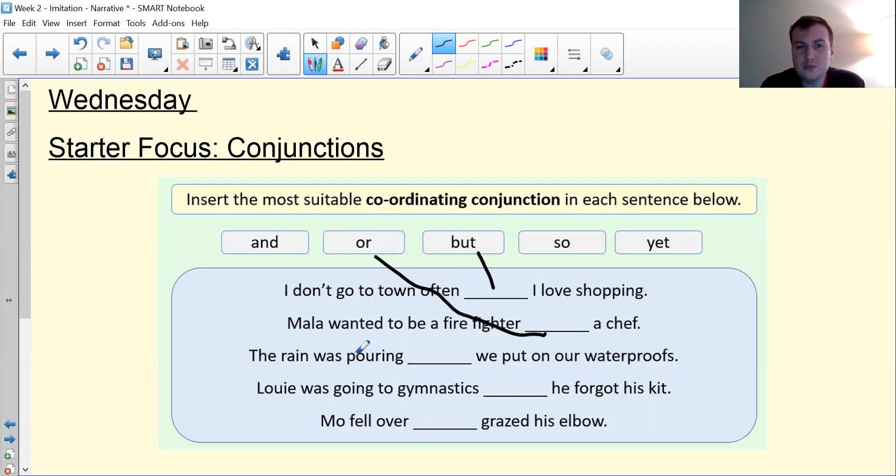The rain was pouring, we put on our waterproofs. It's a result of the first thing. The rain was pouring, so it happened next. So we put on our waterproofs. So.